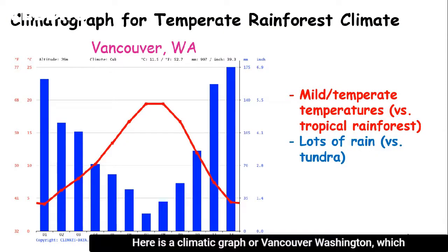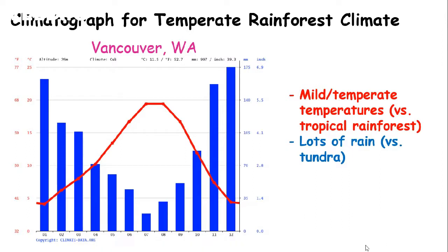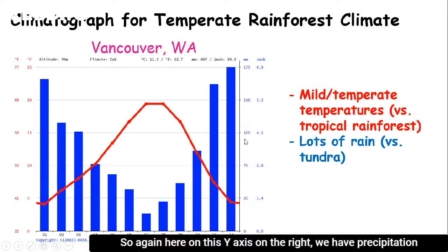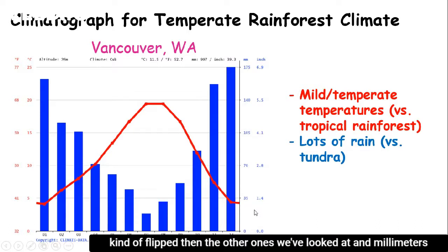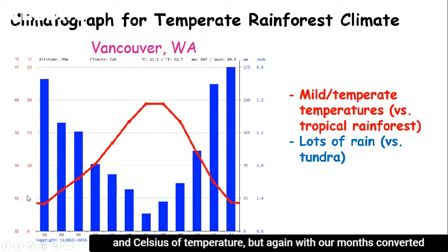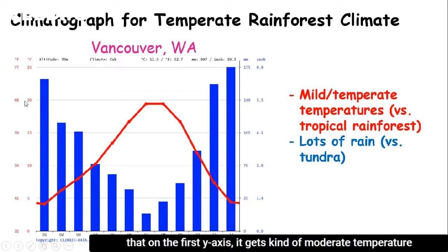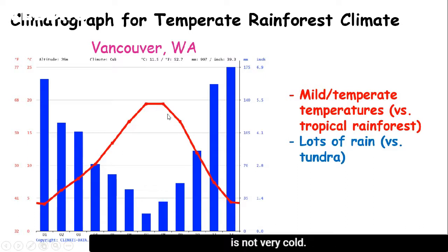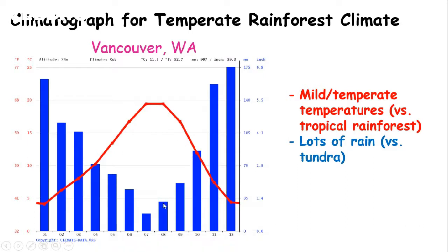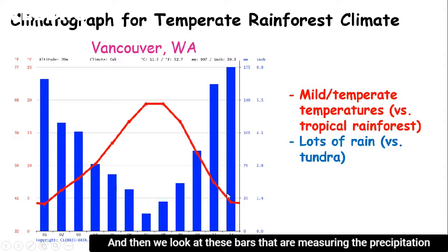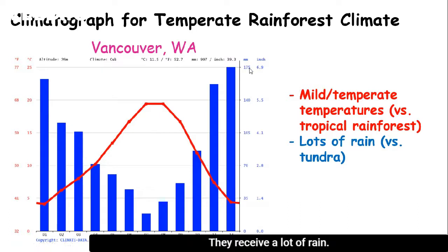Here is a climatograph for Vancouver, Washington, which is in a temperate rainforest biome. On the y-axis on the right we have precipitation in millimeters and inches, and on the other y-axis we have Fahrenheit and Celsius of temperature, with months converted to numbers on the X-axis. The temperature trend is moderate — not very cold, not very hot. The precipitation bars are pretty high, 175 millimeters in December, so in the winter months they receive a lot of rain.